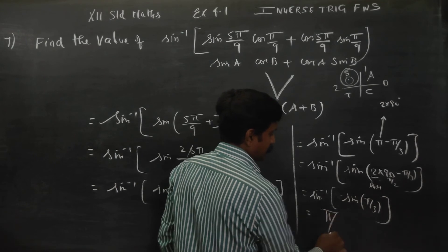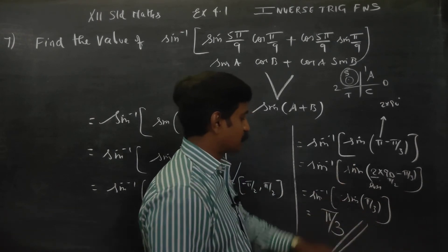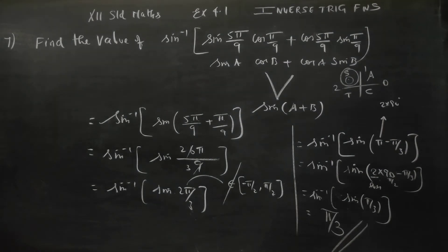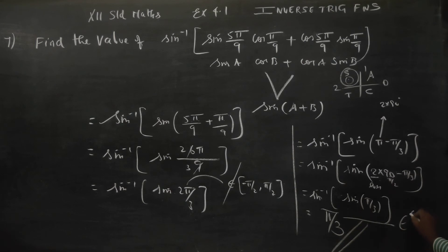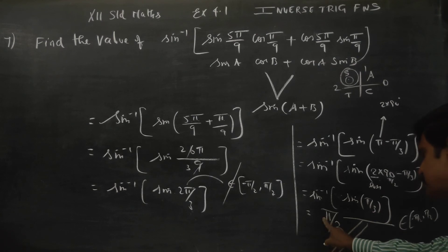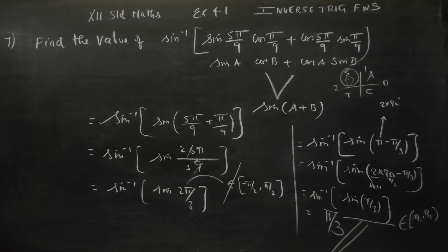Therefore, sin inverse of sin(2π/3) equals π/3. You should check whether it belongs to the principal value range: π/3 is 60 degrees, which lies within [−π/2, π/2]. So the sin inverse nullifies and your final answer is π/3.